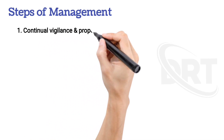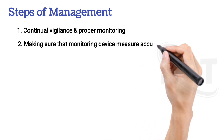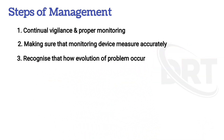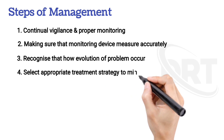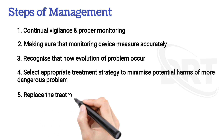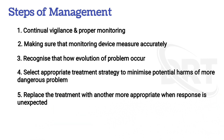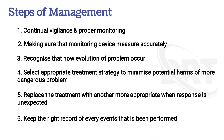Steps of management include continual vigilance and proper monitoring, making sure that monitoring devices measure accurately. Recognize how the evolution of a problem occurs and whether it is physiologically compensated or not. Select an appropriate treatment strategy to minimize potential harms of more dangerous problems. Replace the treatment with another more appropriate one when the response is unexpected. Keep the right record of every event that has been performed.